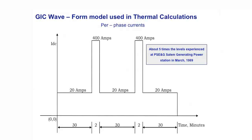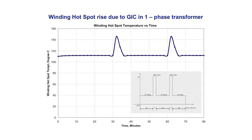For demonstration, consider a GIC signature of 20 amps for 30 minutes, then a very high peak of 400 amps for two minutes, then back to 20 amps for 30 minutes, and so on. The 400 amps level is about five times what occurred in 1989 at Public Service — a very significant GMD storm. When you calculate the hot spot temperature of a transformer under this profile, it goes up by about one degree during the 20-amp periods, then rises from around 111 to 146 degrees during the 400-amp pulse, and then comes back down once the big pulse is over.